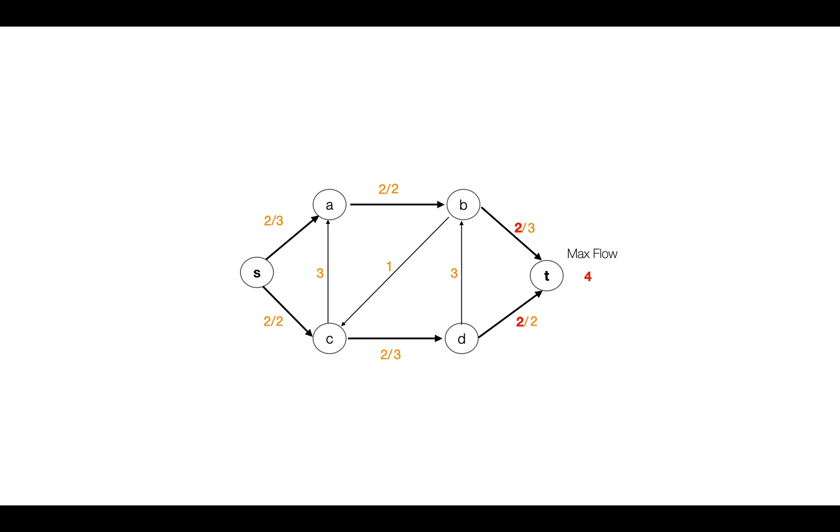We start from the source and if there's a forward edge that's not full, we follow the path. If we have a backward edge that's not empty, we follow the path. For now I'm showing it in the original network, but in the residual network we'll also have backward edges.